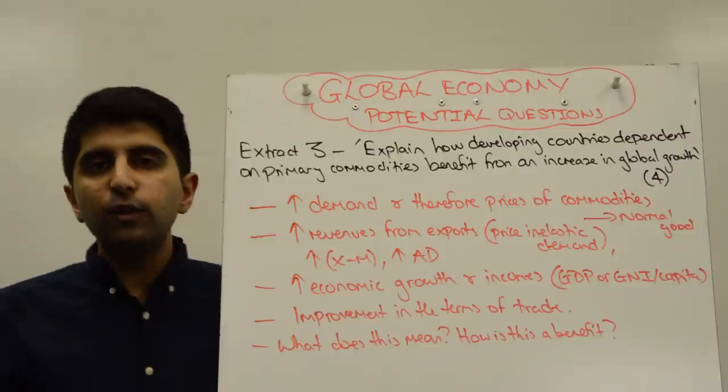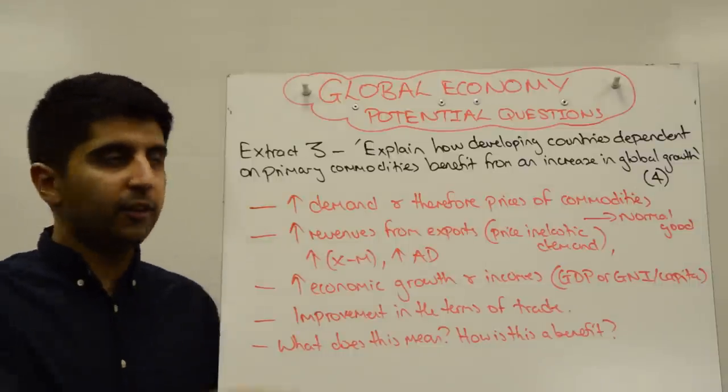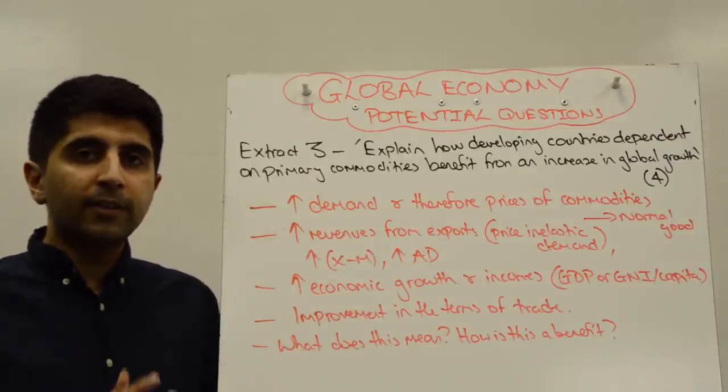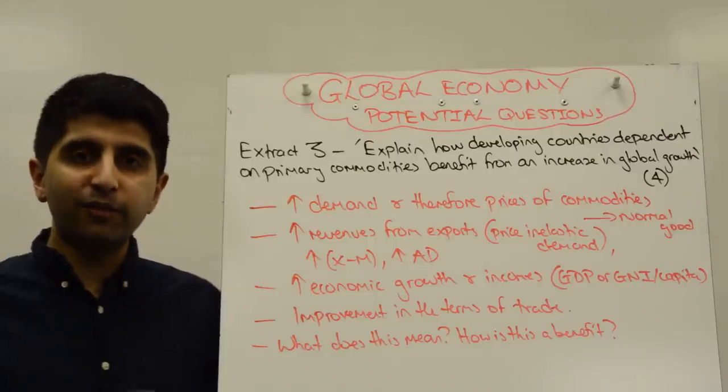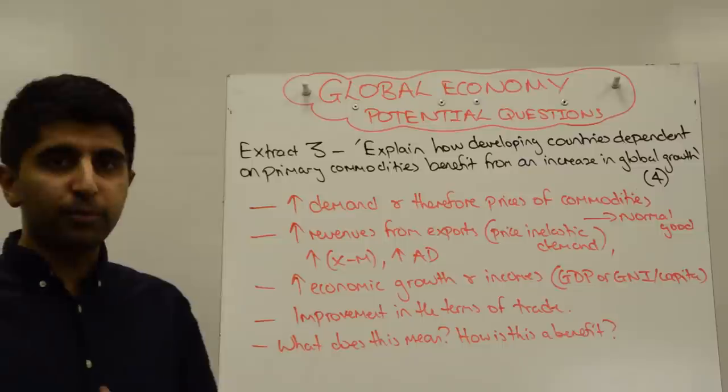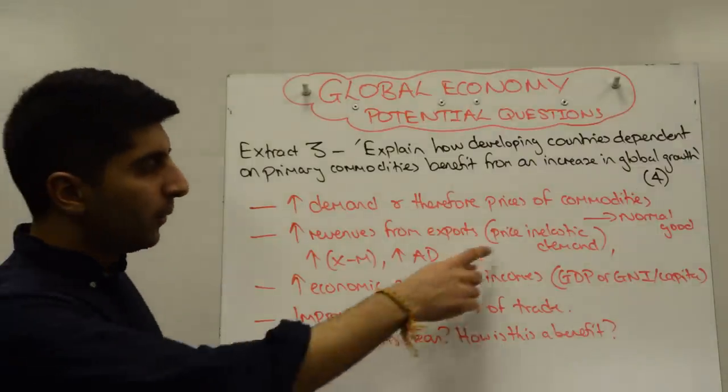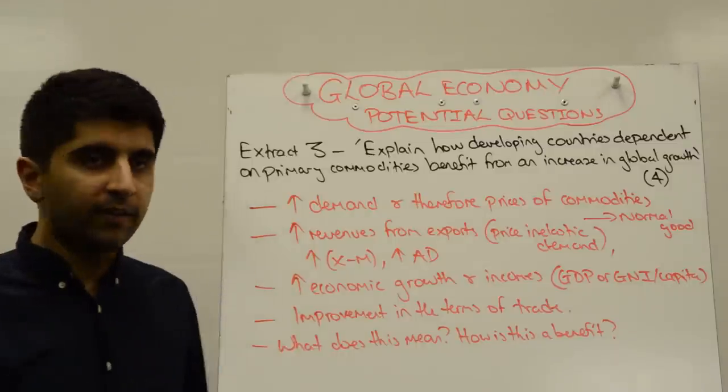Therefore, you'll say revenues from the exports of primary commodities for developing countries who are dependent on them will increase because the price elasticity of demand for primary commodities is inelastic. Therefore, as prices go up, export revenues are likely to go up. That will increase X minus M and thus increase AD.